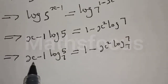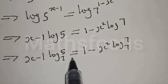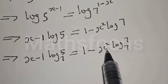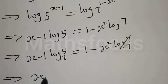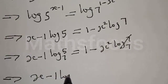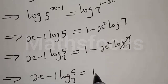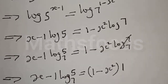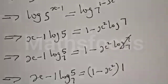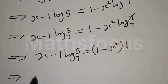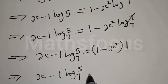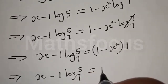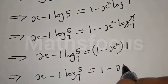We have x minus 1 times log base 7 of 5 equal to 1 minus x squared times log base 7 of 7. Since log base 7 of 7 equals 1, we have x minus 1 times log base 7 of 5, equal to 1 minus x squared.